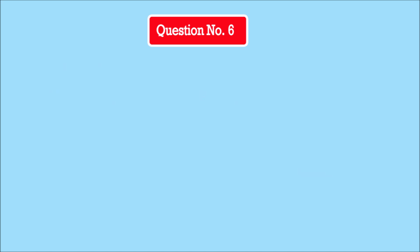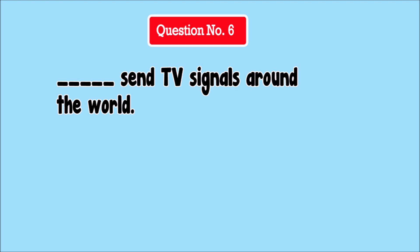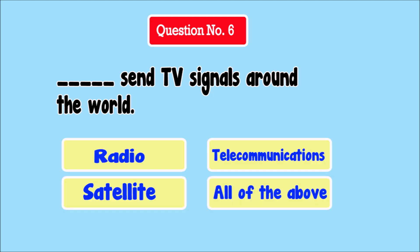Question Number 6. Blank sends TV signals around the world. Answer choices: Radio, Telecommunications, Satellite, All of the above.